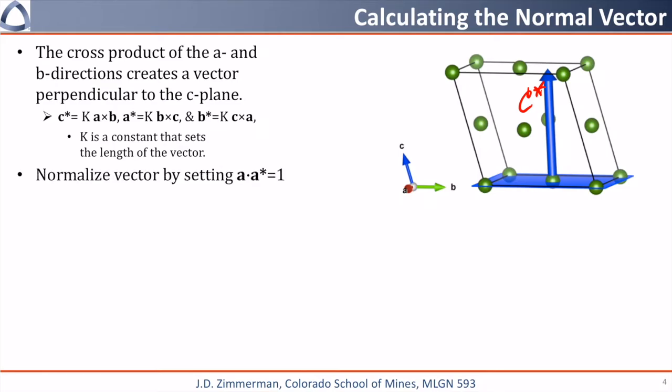In crystallography, we set the length of each of these vectors, for example, by setting a dot a star equal to one, and similarly, b dot b star and c dot c star will also equal one. As a note, solid state physics typically uses a dot a star equal to two pi.